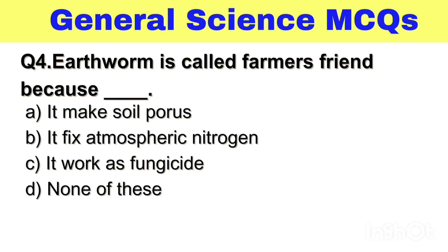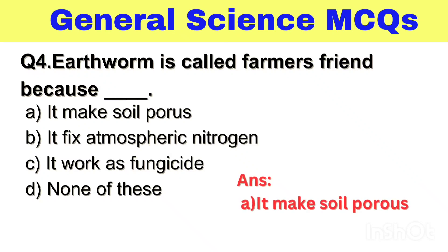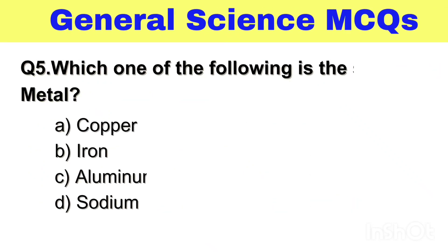Question No. 4. Earthworm is called Farmer's Friend because — Option A. It makes soil porous, B. It fixes atmospheric nitrogen, C. It works as fungicide, D. None of these. The right answer, Option A. It makes soil porous.